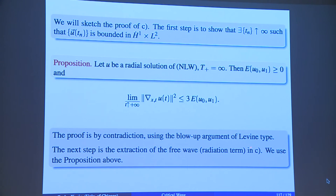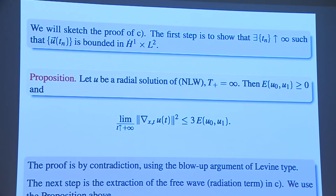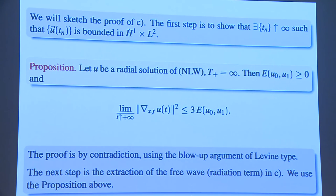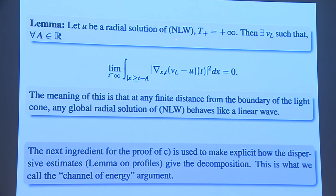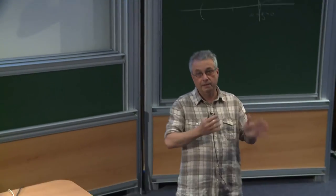The next step is to extract the free wave — the radiation term — in the infinite time case. To do that, first extract it for a sequence of times on which you know the thing is bounded, then show that if you can extract it for a sequence of times, you can extract it for all time. For a radial global solution, there exists a linear solution such that provided your finite distance is within the light cone, the energy norm goes to zero. So at any distance from the boundary of the light cone, any global solution behaves like a linear one; all nonlinear action is strictly contained in the light cone.